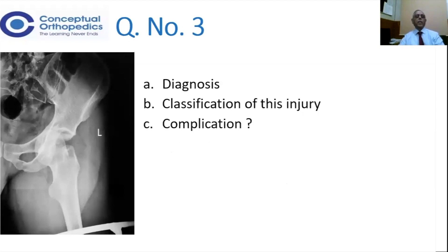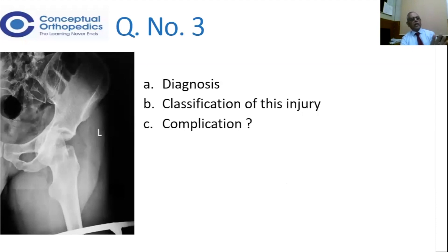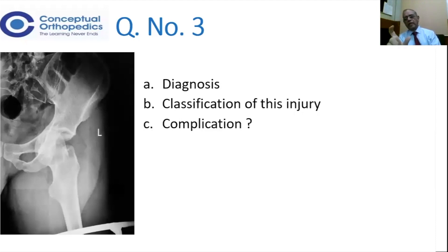Now you come to question number 3 — here is a classical picture. As I told you, when the head is related to the obturator foramen or the pubic ramus, it is an anterior dislocation of the hip joint. The classical clinical picture is flexion, abduction, and external rotation. You would appreciate that the lesser trochanter is very prominent here and the greater trochanter is less prominent — that is a classical anterior dislocation.